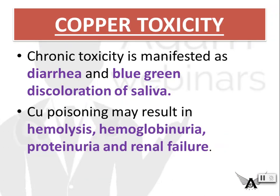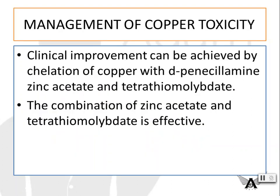Finally, copper toxicity: chronic toxicity is manifested as diarrhea and blue-green discoloration of saliva. Copper poisoning may result in hemolysis, hemoglobinuria, proteinuria, and renal failure — hemoglobinuria is blood in urine and proteinuria is proteins in urine. Management of copper toxicity: clinical improvement can be achieved by chelation of copper with D-penicillamine, zinc acetate, and tetrathiomolybdate. The combination of zinc acetate and tetrathiomolybdate is effective.